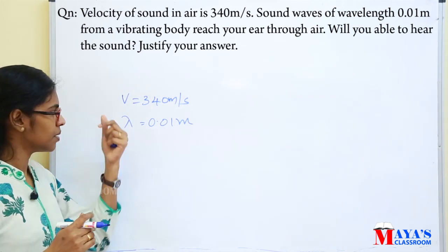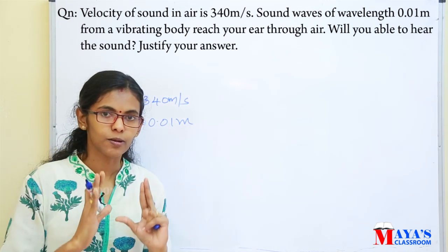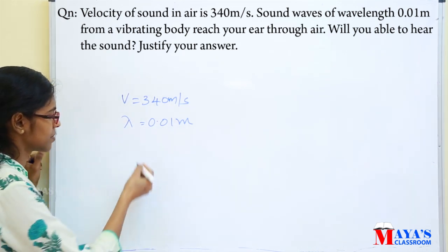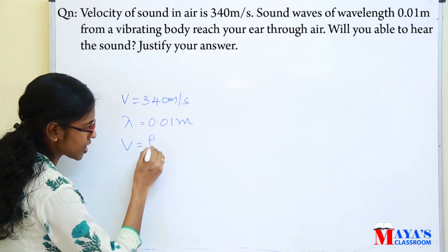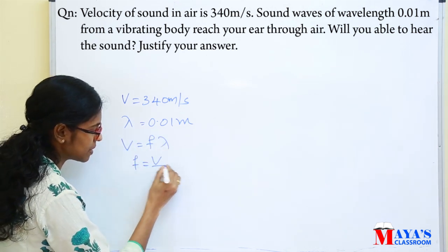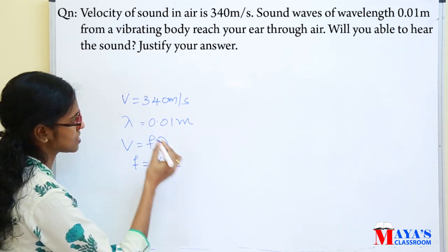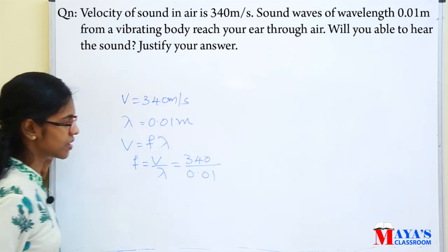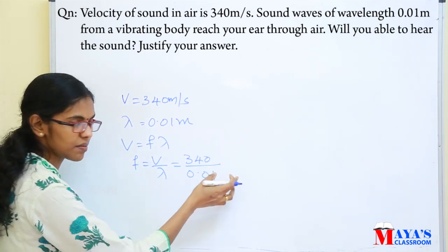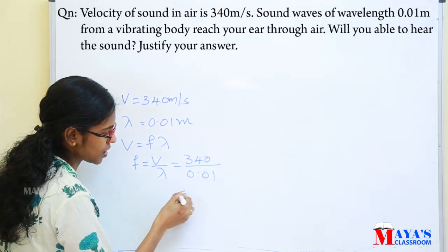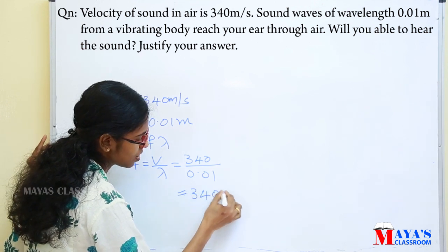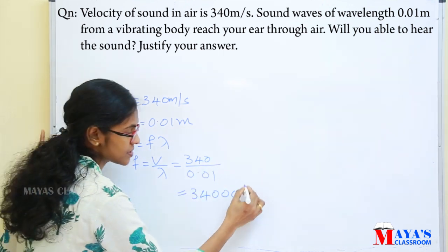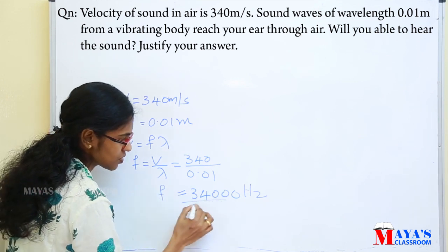We calculate the frequency using F equals V divided by lambda. The velocity is 340 and lambda is 0.01. Therefore the frequency is 34000 hertz.